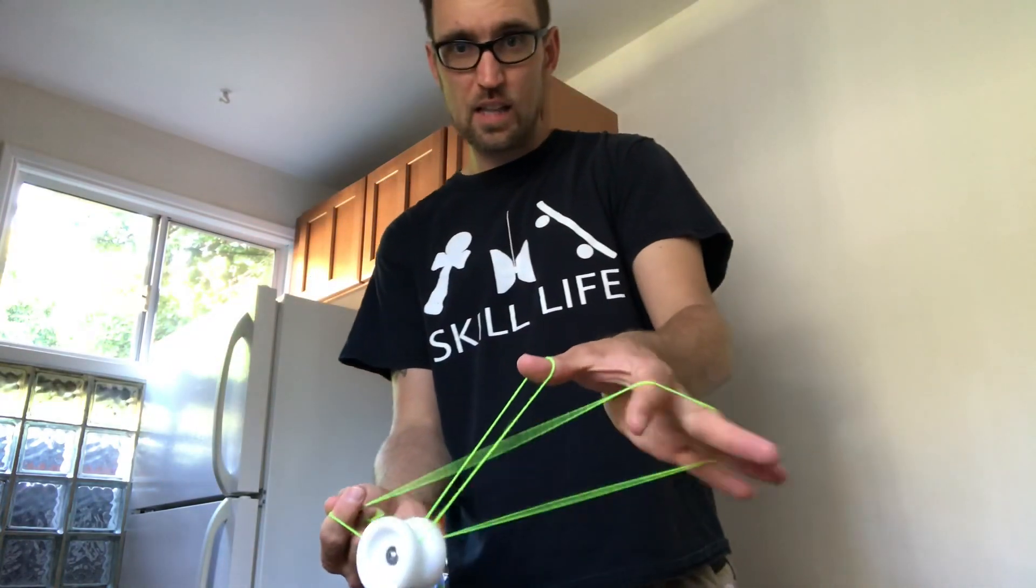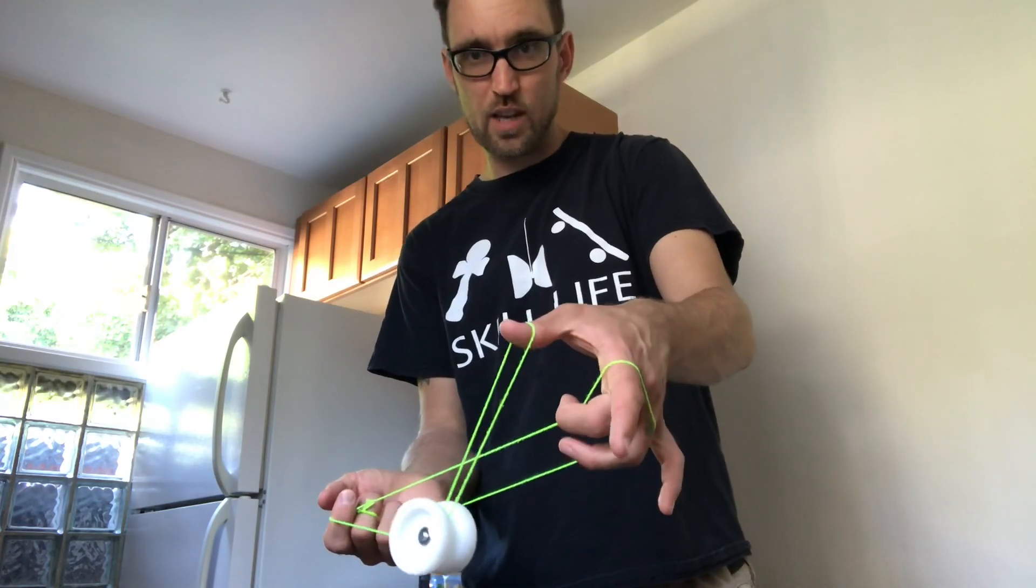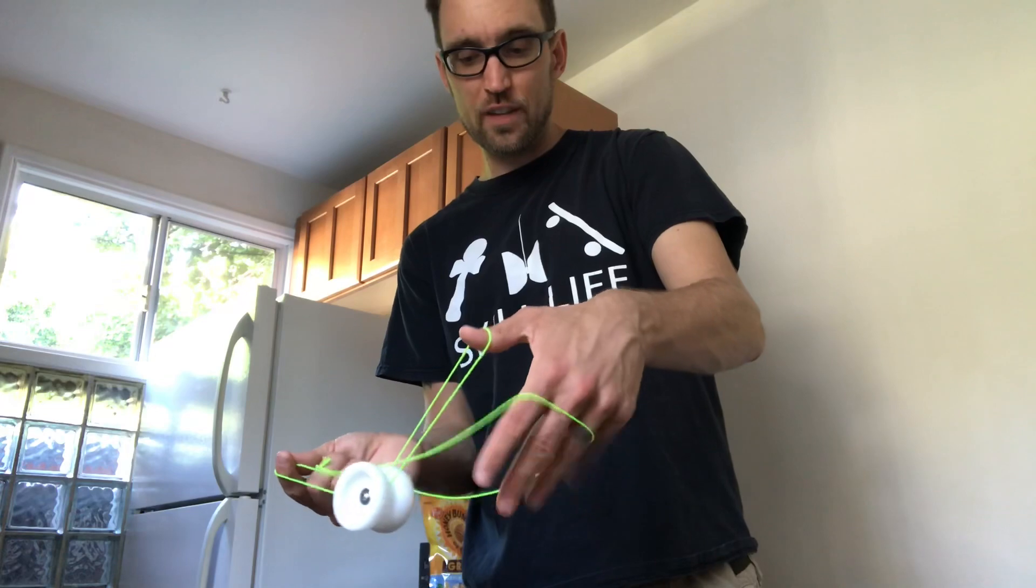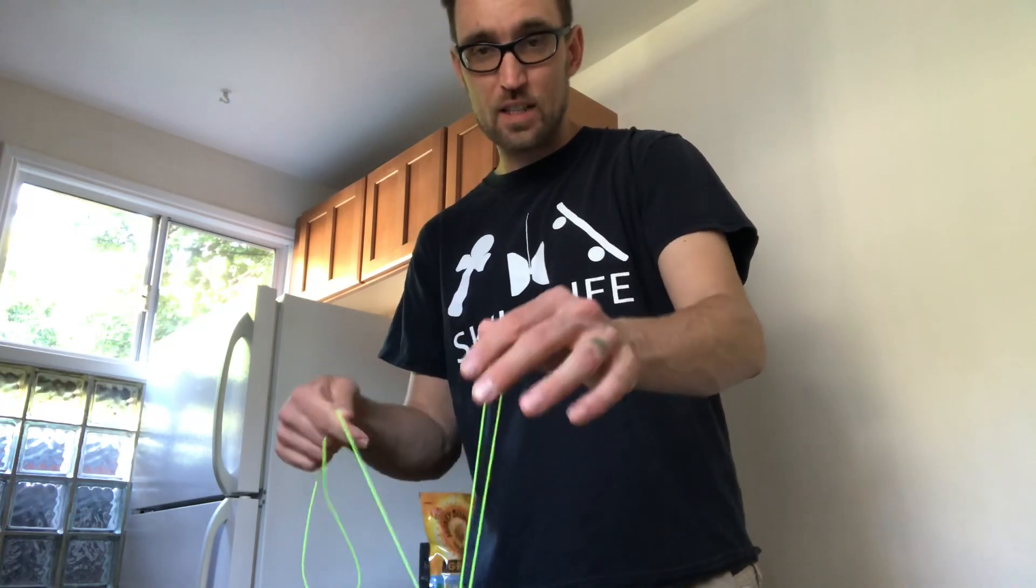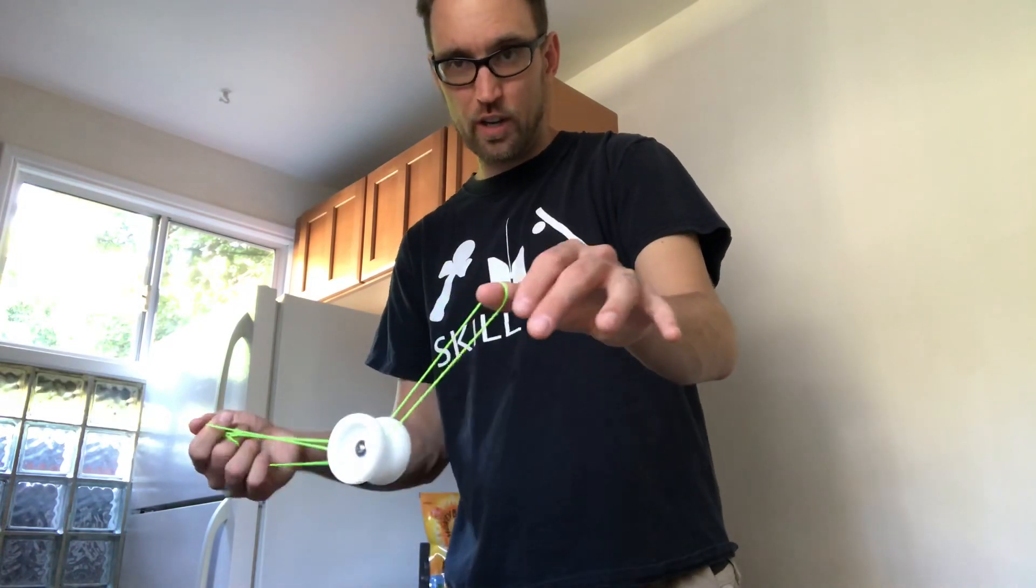Next step, this slack down here is going to drop onto the yo-yo, so the string segment closest to it falls on the inside of the yo-yo. If you miss, that's not the end of the world. You can just lift it up and hook it off.